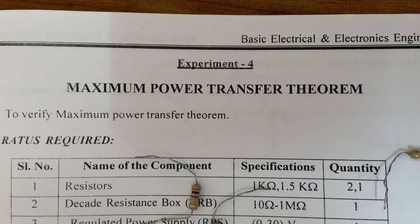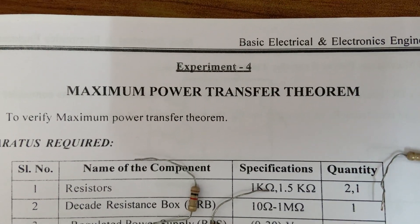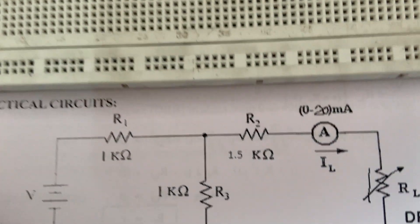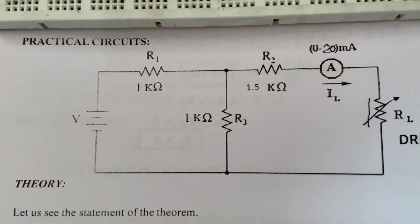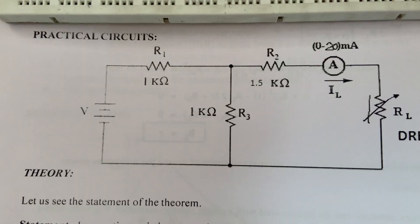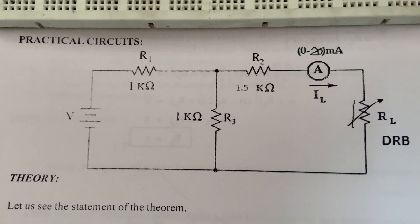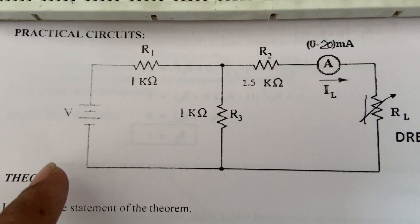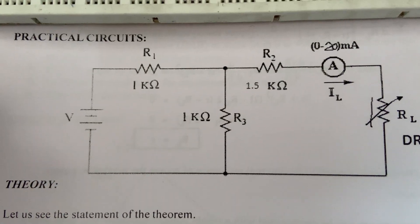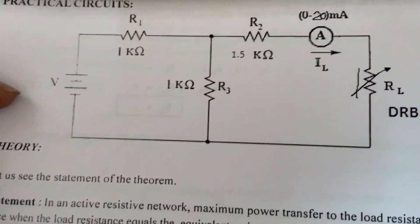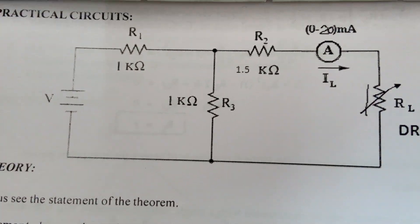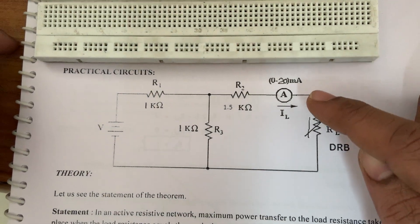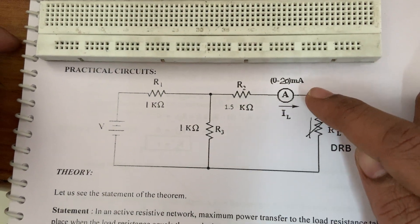Today we are going to discuss the Maximum Power Transfer Theorem. The circuit diagram below shows the setup for verification. We are going to keep the voltage at 10 volts and by varying the load resistance value, we are going to note down the current readings.